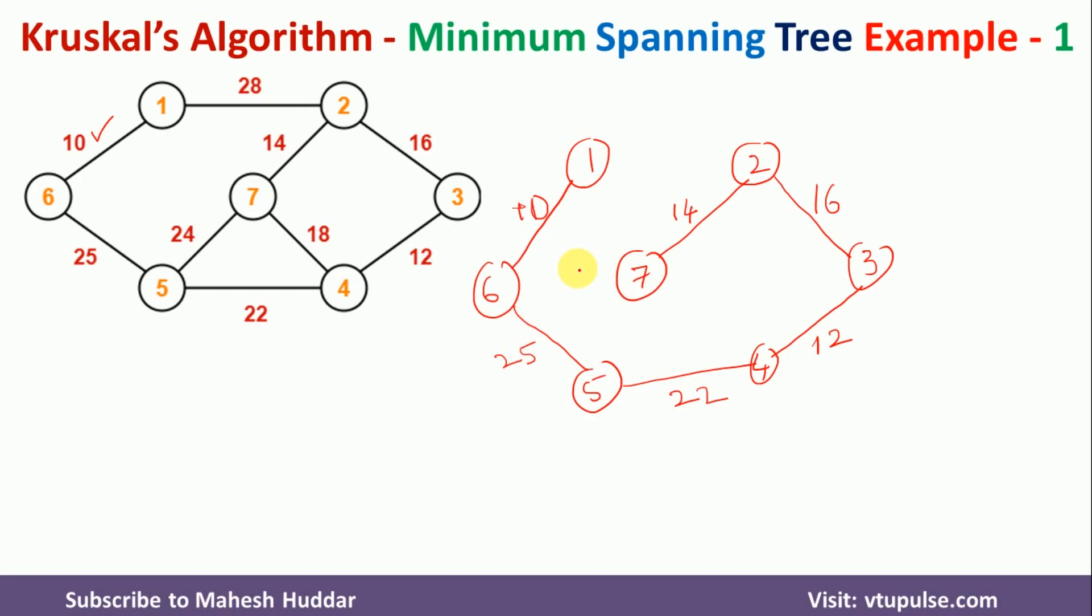In this case, we have drawn 6 edges, that is 1 less than the number of nodes. Once you draw the n-1 number of edges, we need to stop here and this is the final minimum spanning tree.